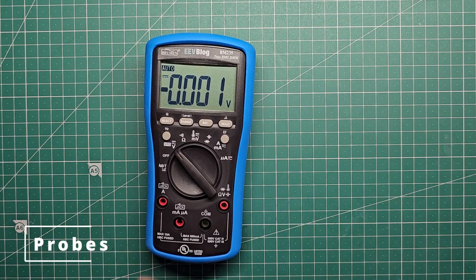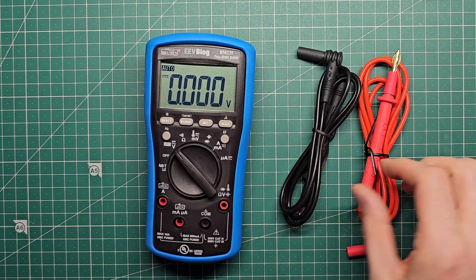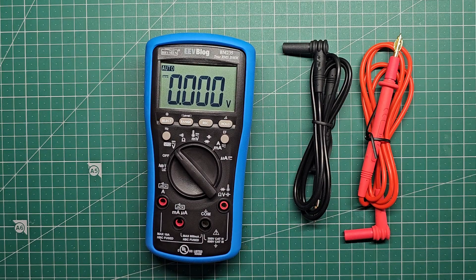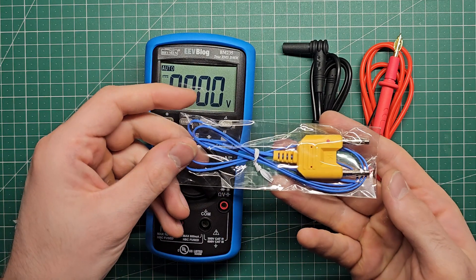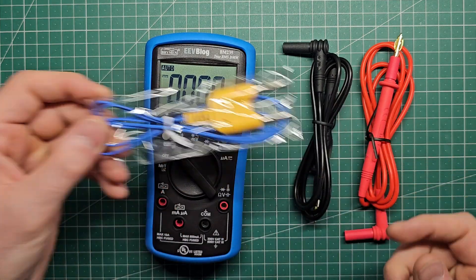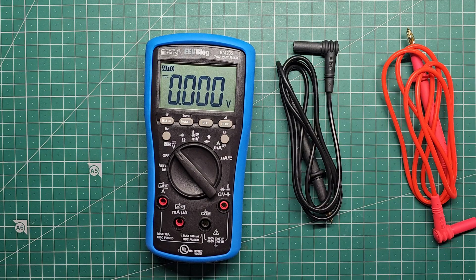When you get a multimeter it should always come with a set of probes, obviously one red and one black so that you can actually test things and in this case I also got a temperature thermocouple which I can use to measure temperatures. I'll explain that a bit later.